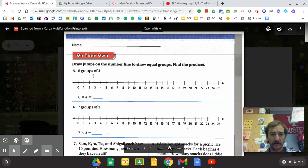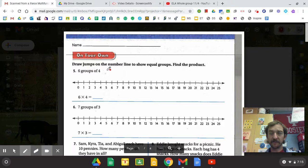So what we're going to do is on the number line, we're going to skip count. So this is six groups of four.